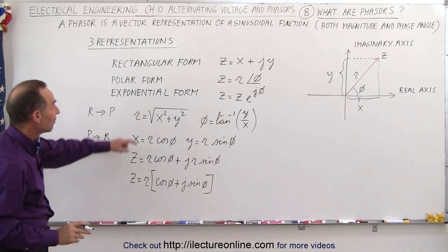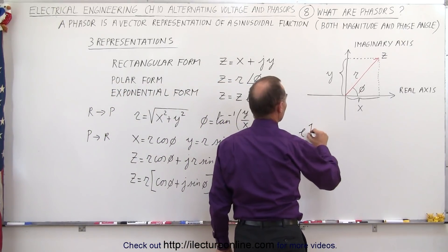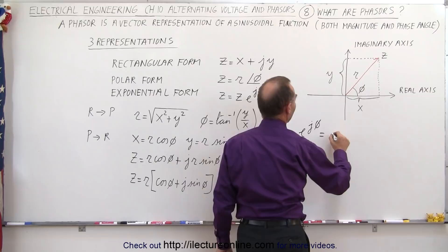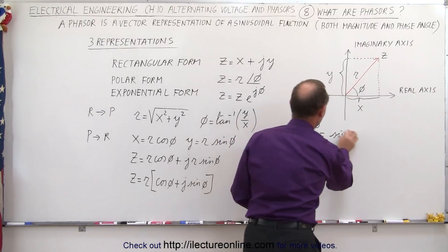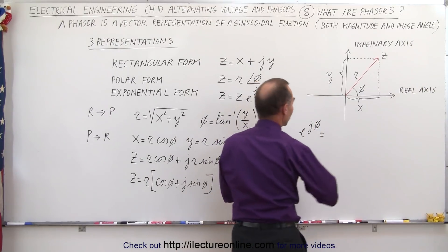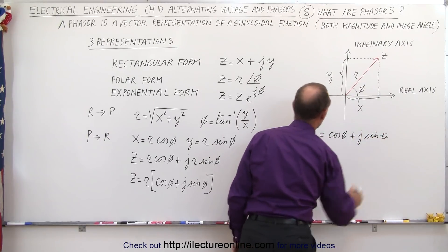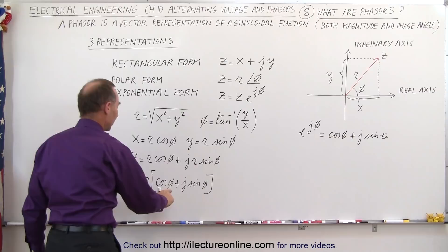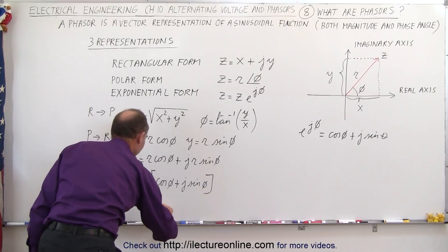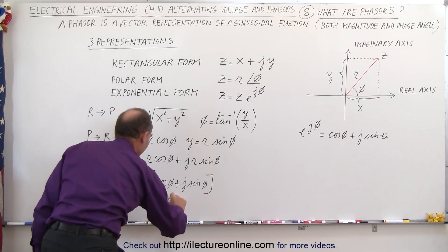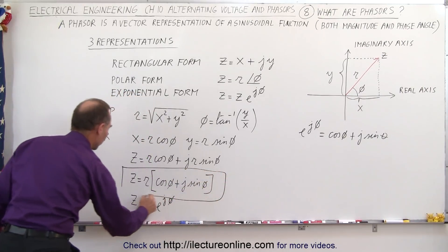Recalling Euler's formula, e to the j times an angle can be written as the cosine of that angle plus j times the sine of that angle. You can then see that substituting this identity gives z equals the magnitude R times e to the j times phi. This shows how all these various forms — rectangular, polar, and exponential — are connected and can represent phasors.